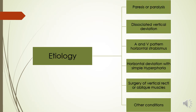Coming to the etiology, the most common cause is paresis or paralysis of the cyclo-vertical muscles responsible for intorsion or extorsion. You can see in-cyclotropia or ex-cyclotropia if there is paralysis of the superior or inferior oblique. It is also seen in dissociated vertical deviation and with A or V pattern horizontal strabismus.